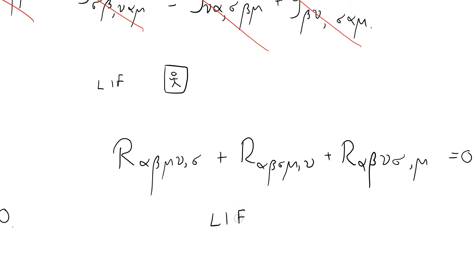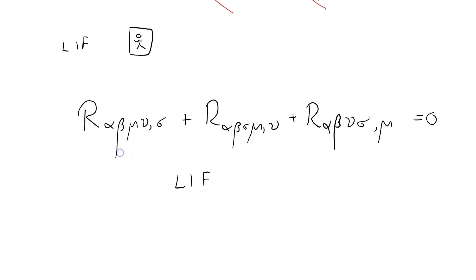And we've established that this is true in a local inertial frame, an LIF, an elevator coordinate system. And because that is a valid tensor equation, we can replace the commas with semicolons. These are known as the Bianchi identities.